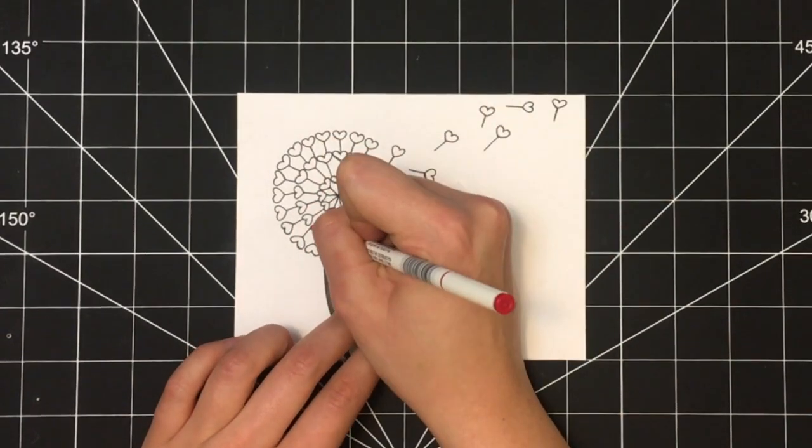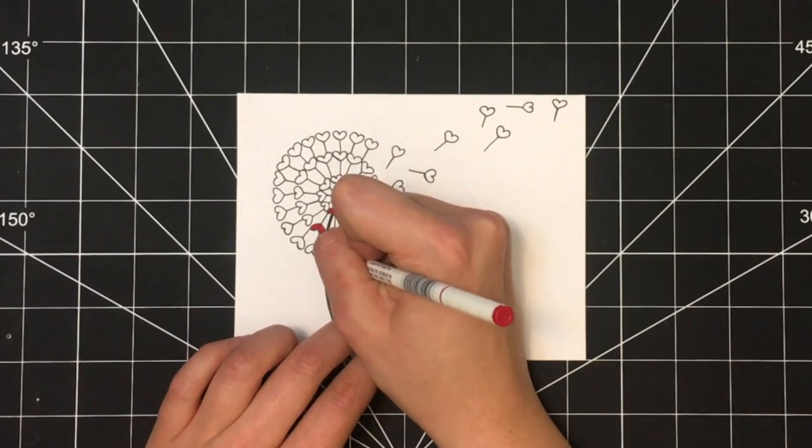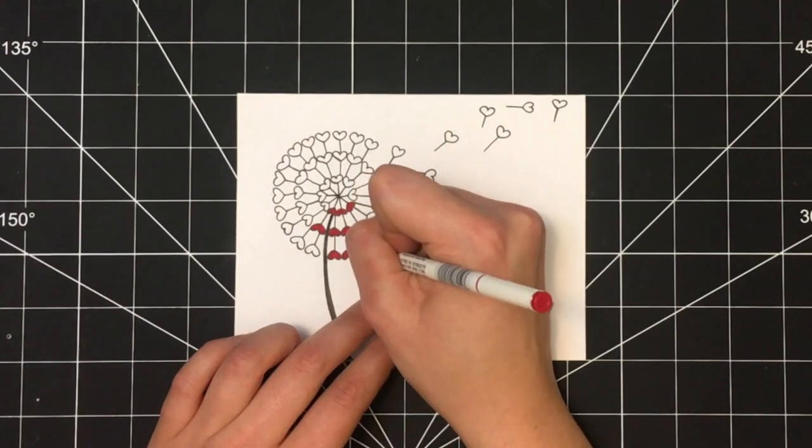Next you'll need a red pen to color in all of the hearts that you just outlined in black.